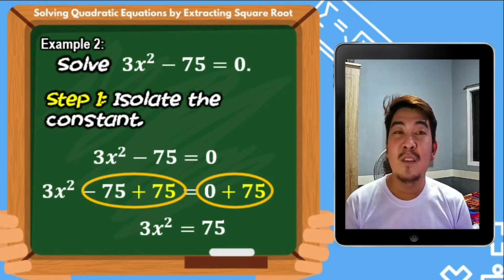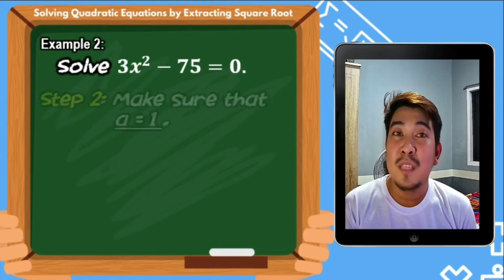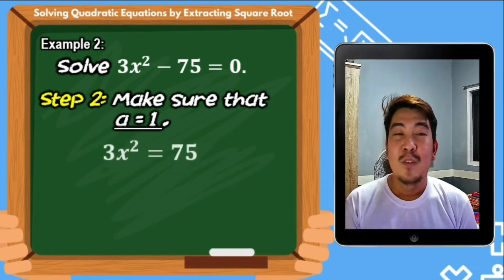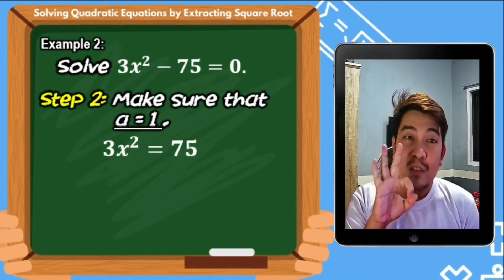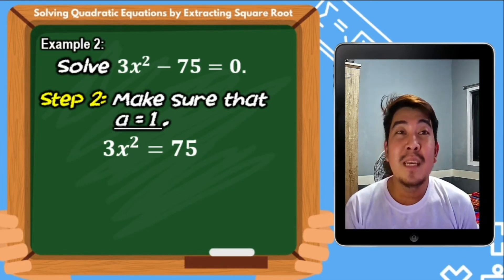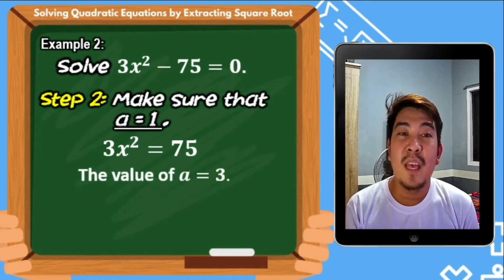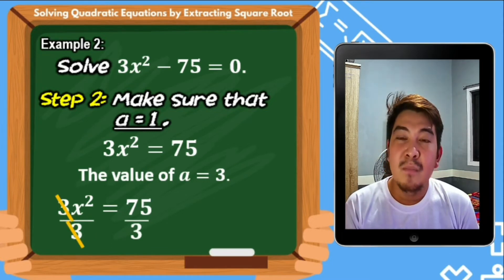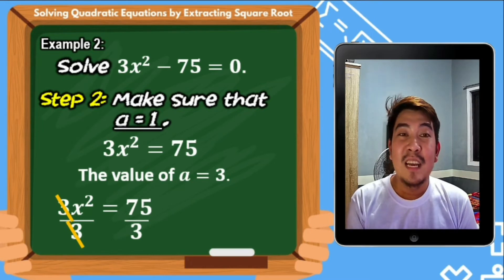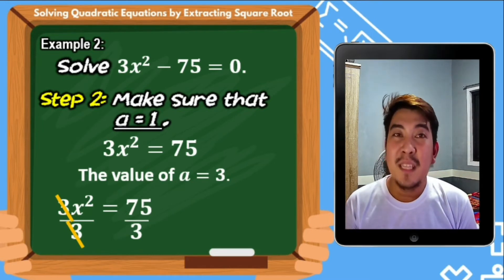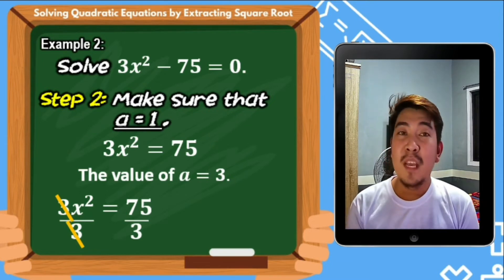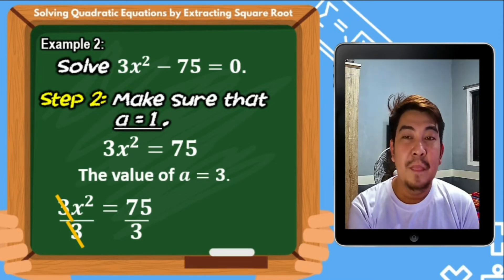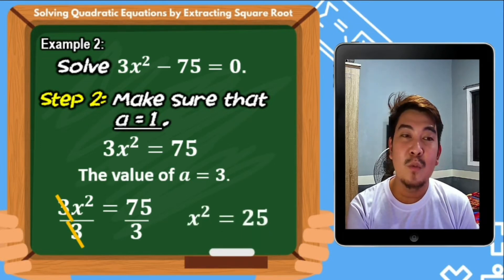After isolating the constant, we go to step 2: make sure the value of A equals 1. In this case, the value of A is 3, so we need to make it 1. We divide both sides of the equation by 3. So 3x squared divided by 3 becomes x squared, and 75 divided by 3 is 25. Therefore, the resulting equation is x squared equals 25.